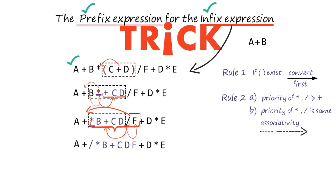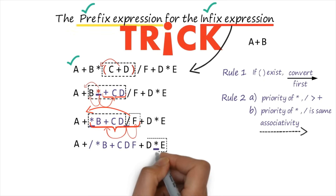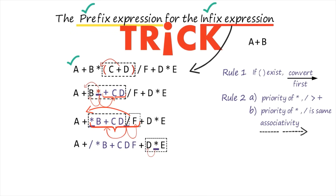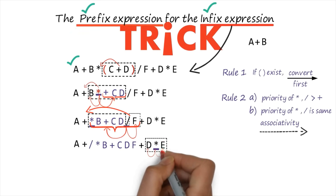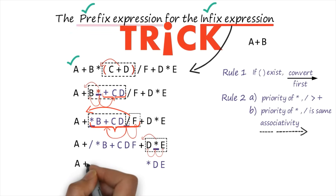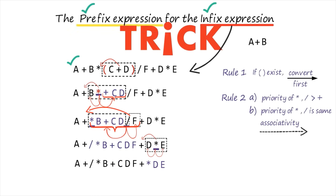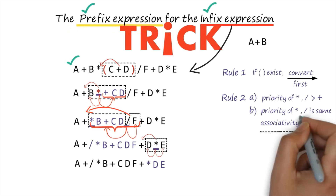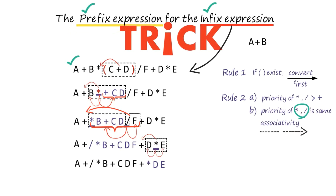Again our associativity is from left to right, and the next remaining star is processed. We work on that section — this is the left part and this is the right part. We drag that operator, so it becomes star de, and the entire portion remains as it is. We have now converted all operators that had the same priority using left-to-right associativity.